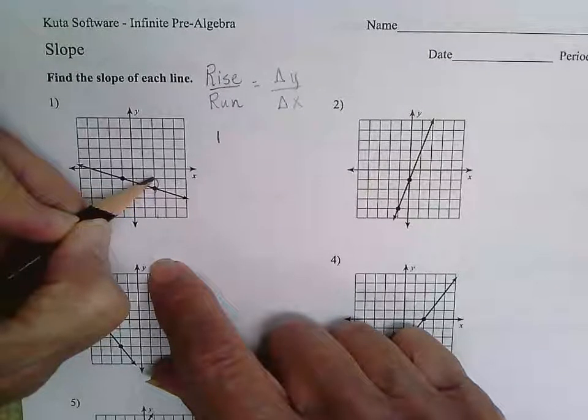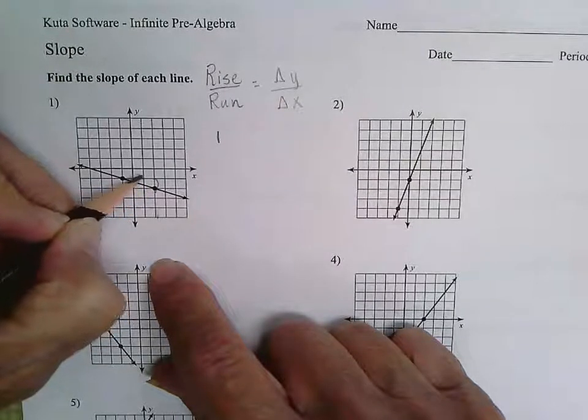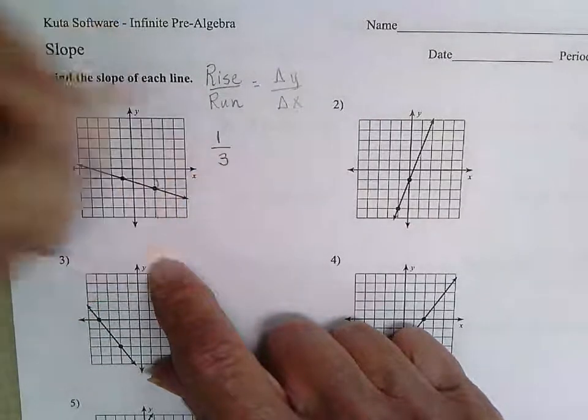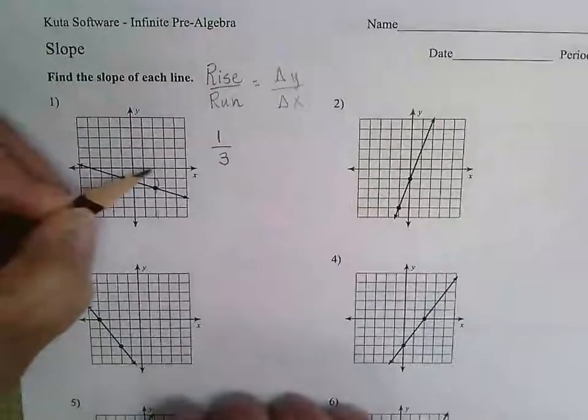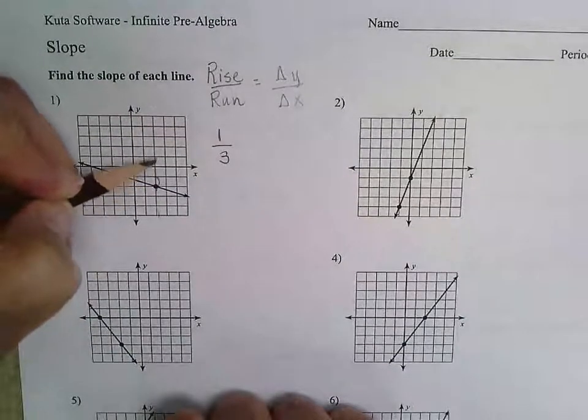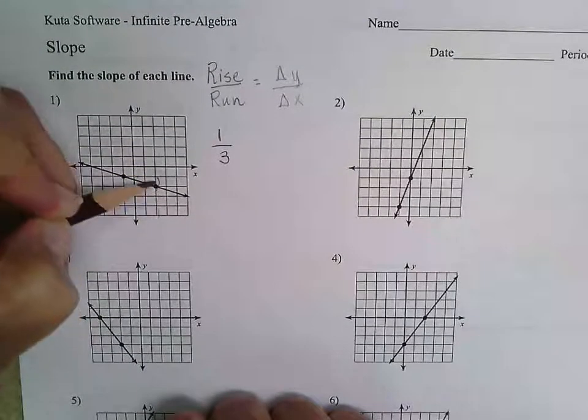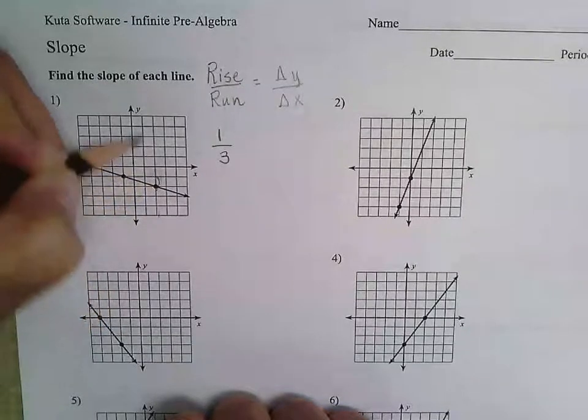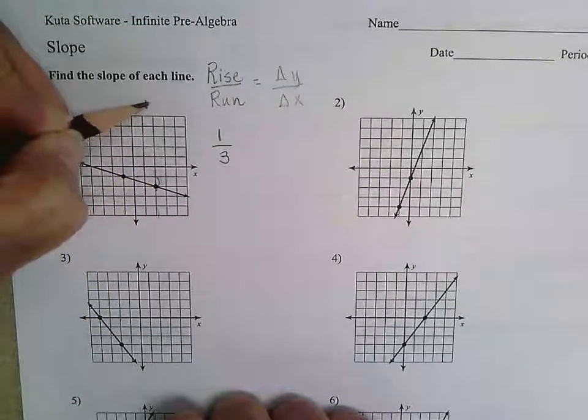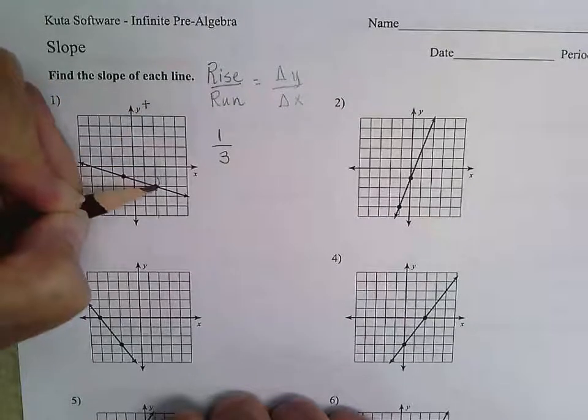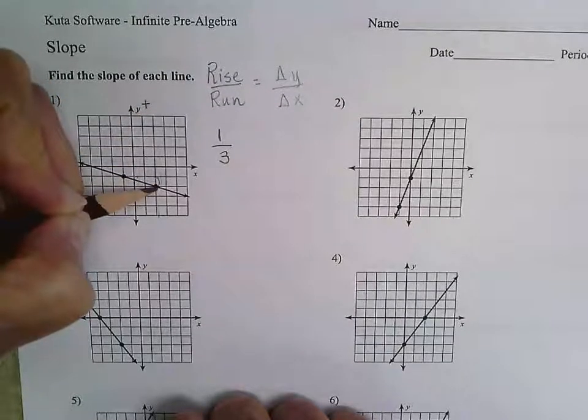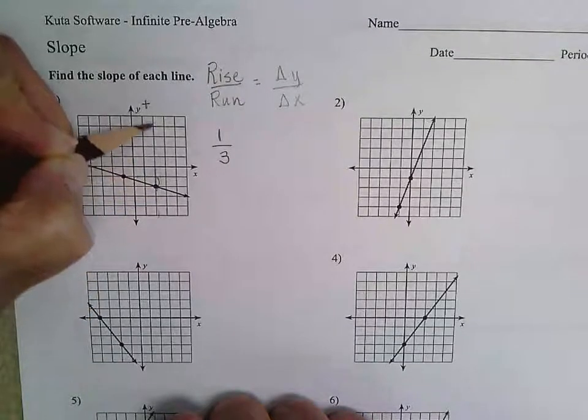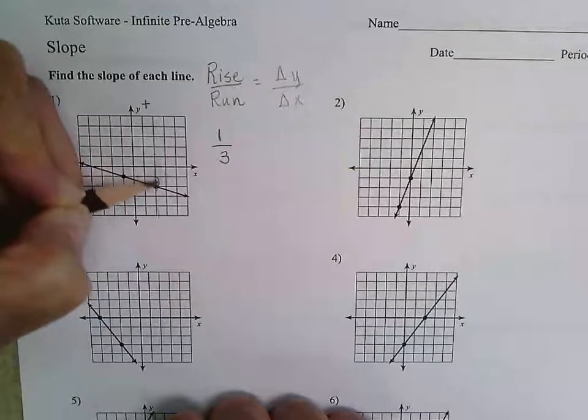So we are going up one and we are going one, two, three over. Now when we look at this we notice with our rise that when we go from here up to here we are going in the general direction where the y axis is positive. So moving from here to here we are going in a positive direction vertically.